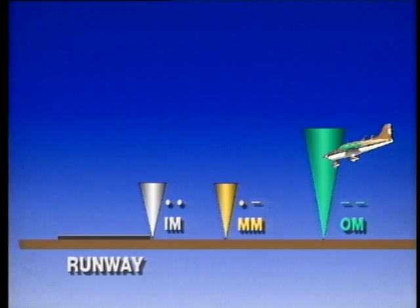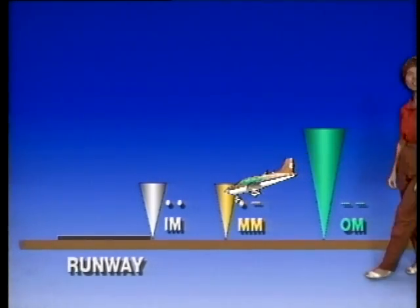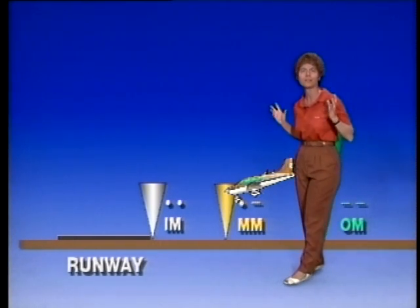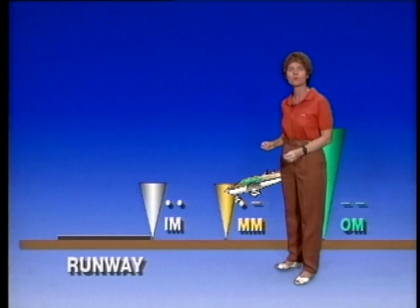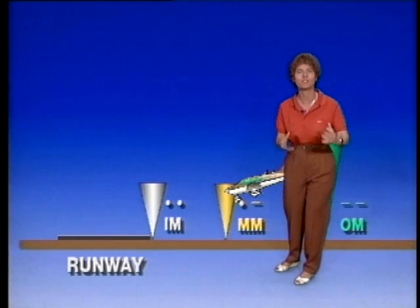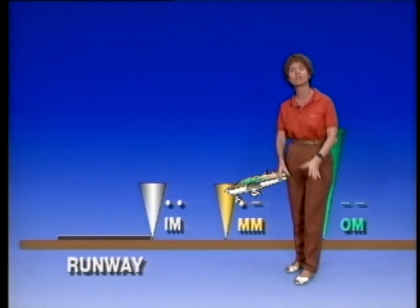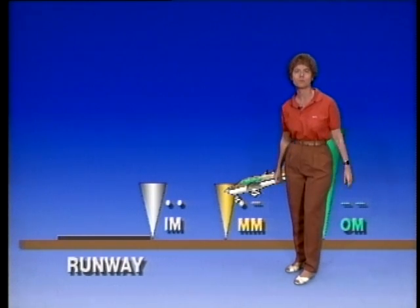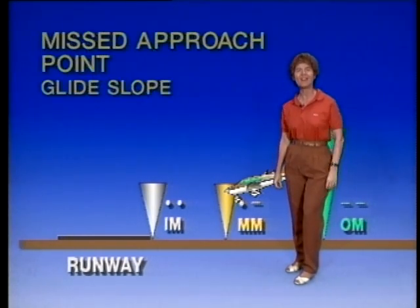Let's assume that you're shooting an ILS approach, and at the end of the approach you do not have those three conditions — you do not have the airport in sight, or you're not in a position for a normal landing, or the visibility doesn't meet what the approach chart requires. How exactly do you define your missed approach point when you're using a glide slope?